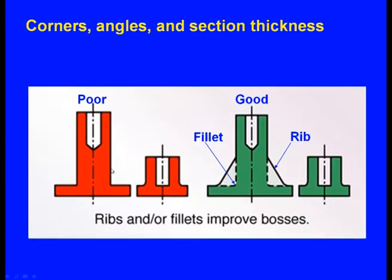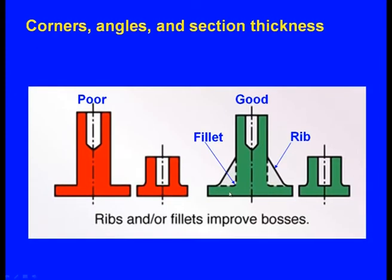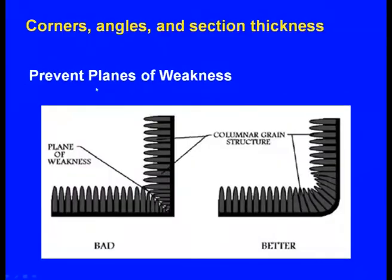In another case study, the drawing supplied by the customer is a poor design. We are making a rib — that rib is not in the customer's drawing, but the foundry man has to provide it. Where a sharp corner exists in the customer drawing, we provide a fillet. We must also prevent planes of weakness by avoiding sharp corners, making for a better design.